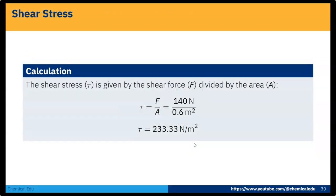Now the calculation of shear stress. Shear stress is nothing but shear force divided by area. Force is 140 N and area is 0.6 m², so shear stress τ = 140 / 0.6 = 233.33 N per meter square.